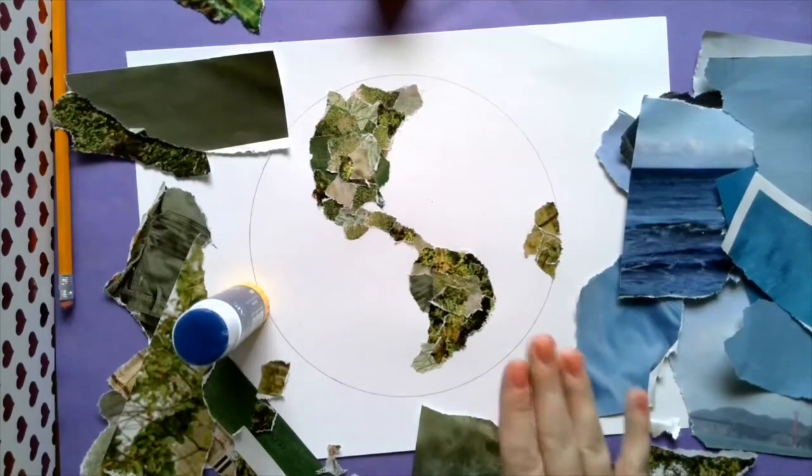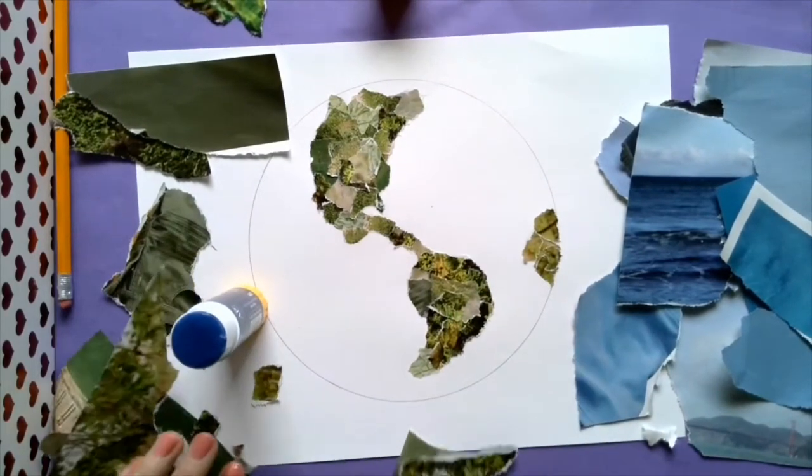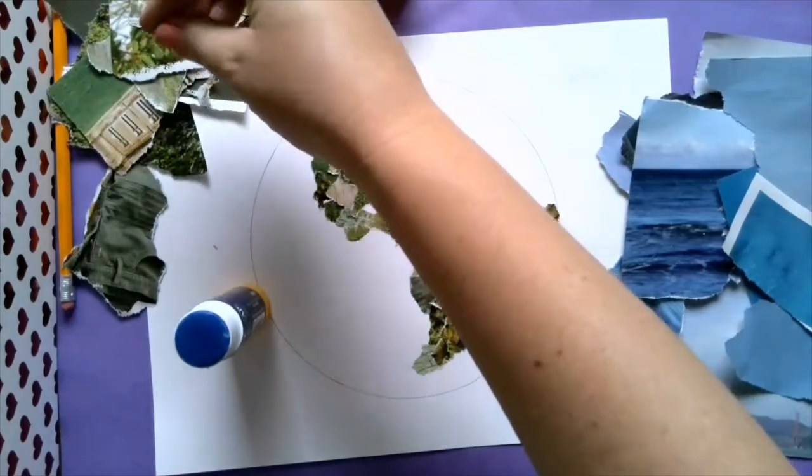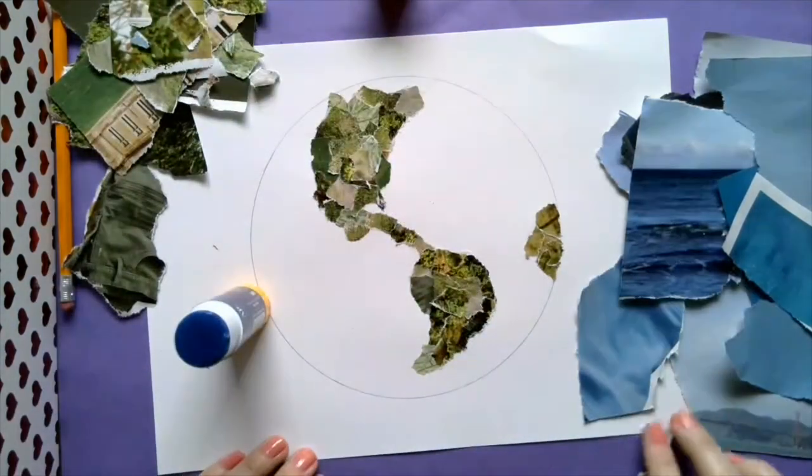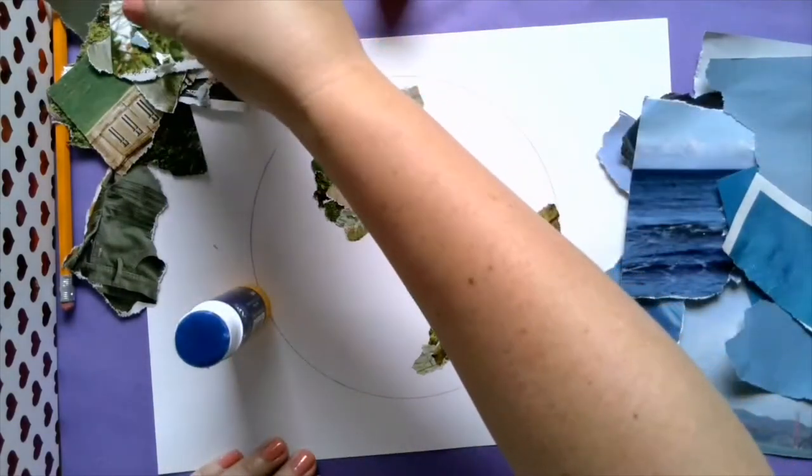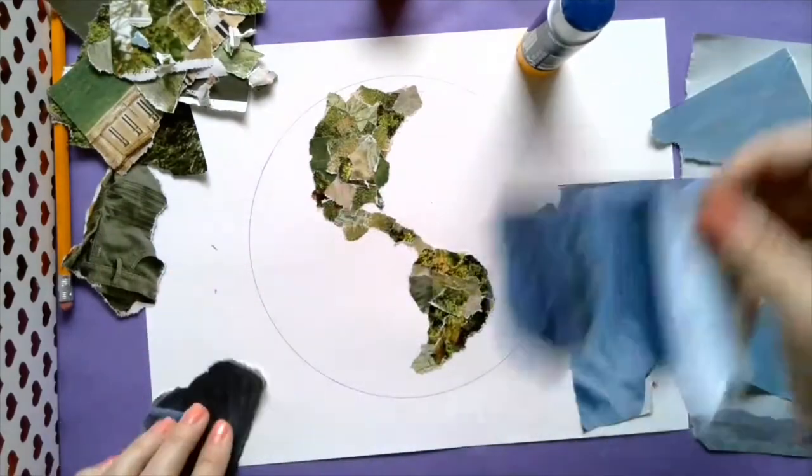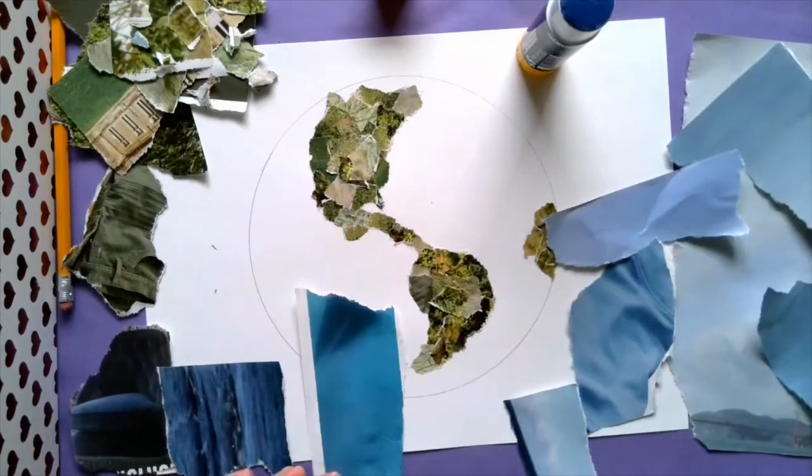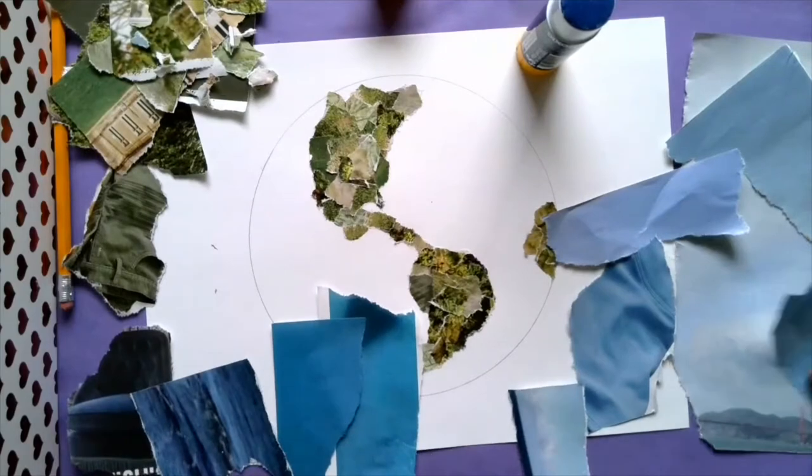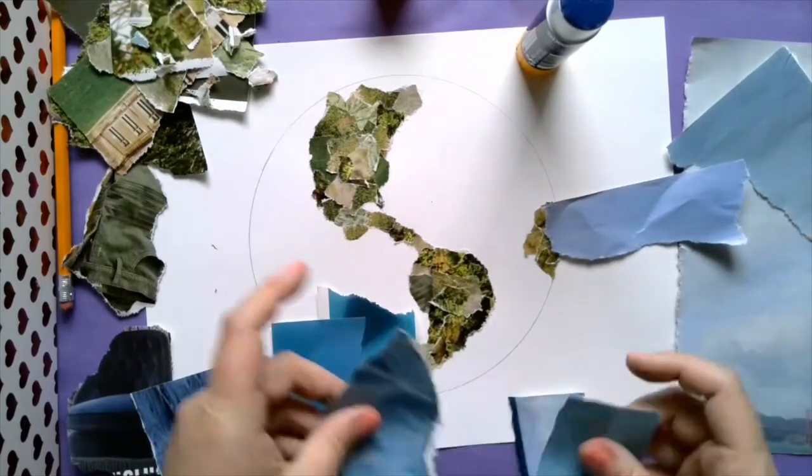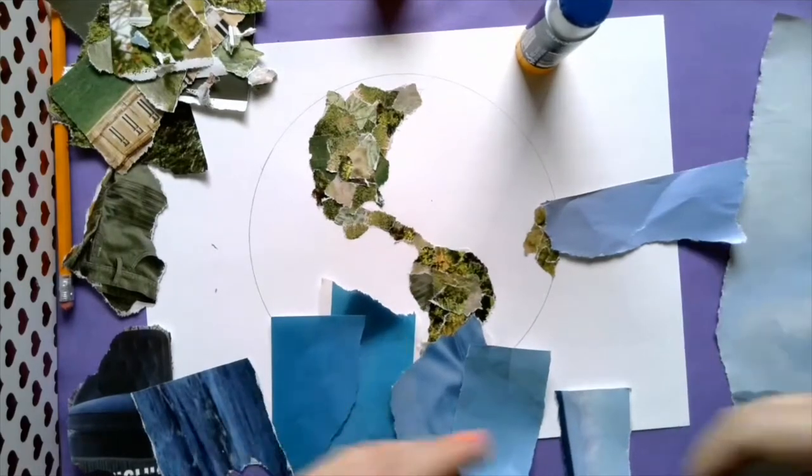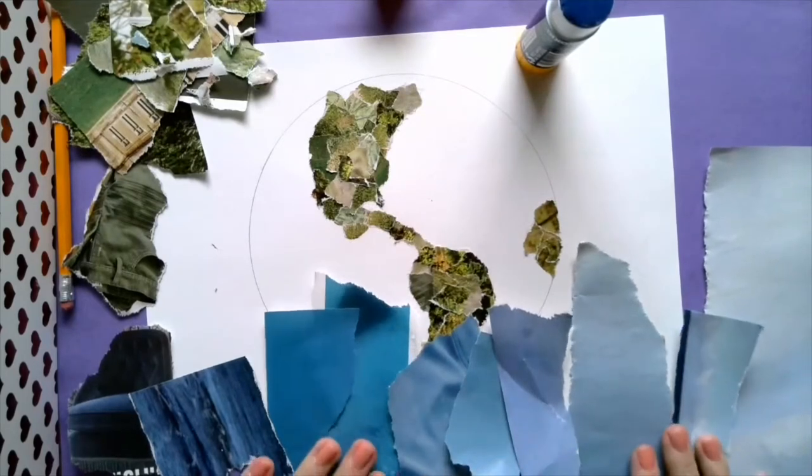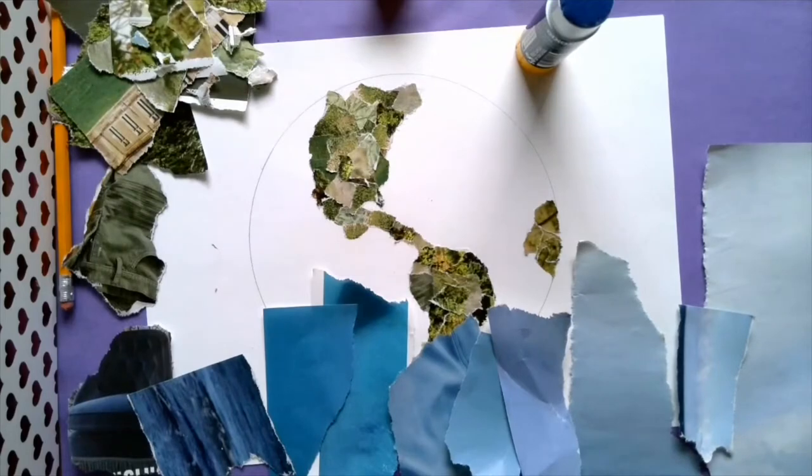Once you have all of your continents filled in, you are going to move all those scraps to the side because you don't need those greens anymore. The next thing we are going to do is line up our blues in a value scale. Remember, value goes from light to dark, and so I have a whole bunch of different—let's split this one because it is both light and dark.